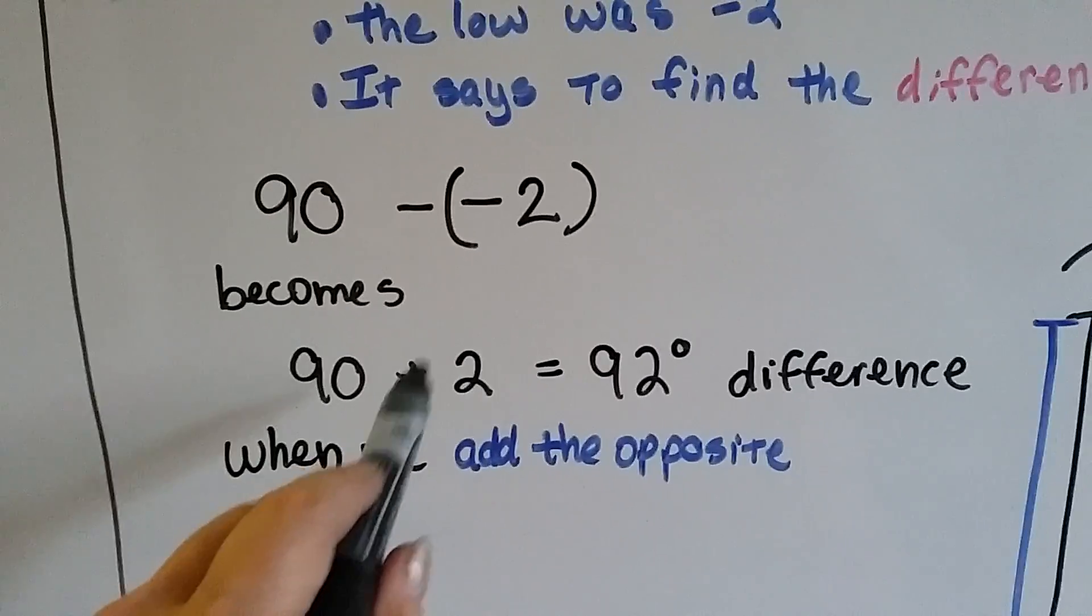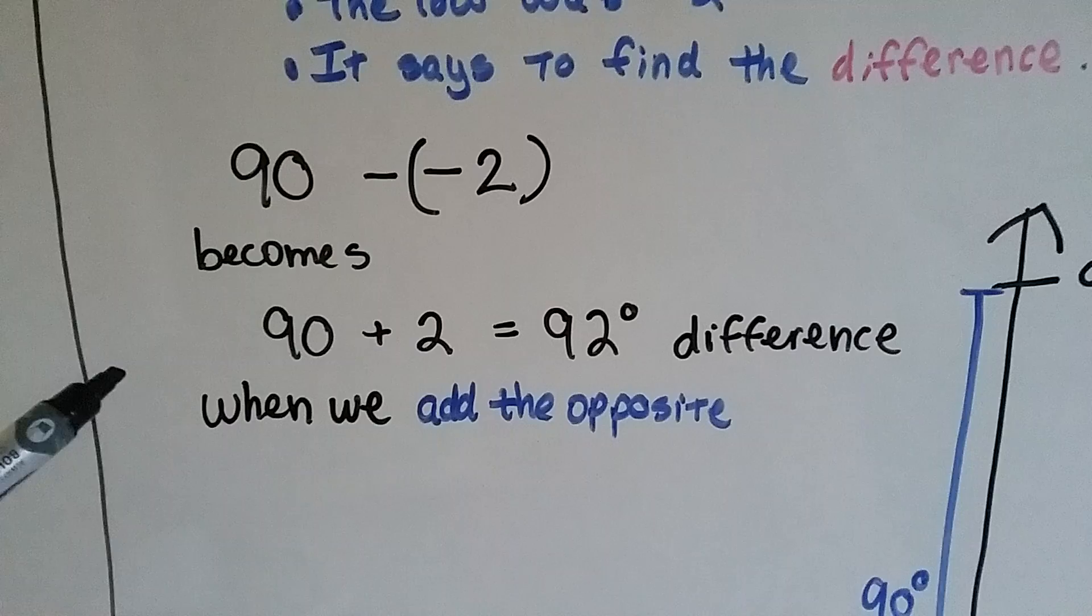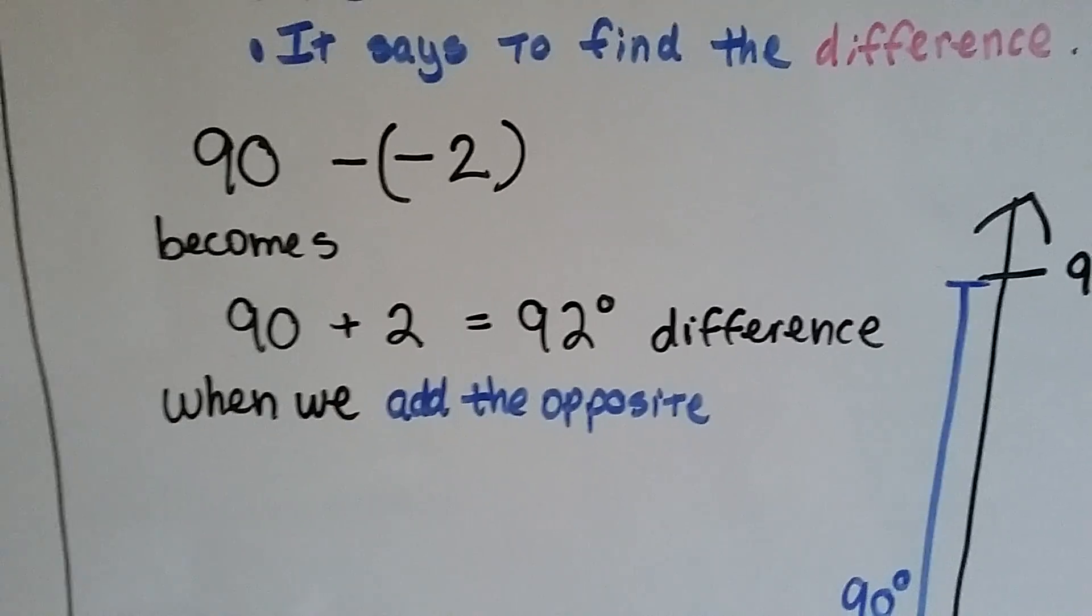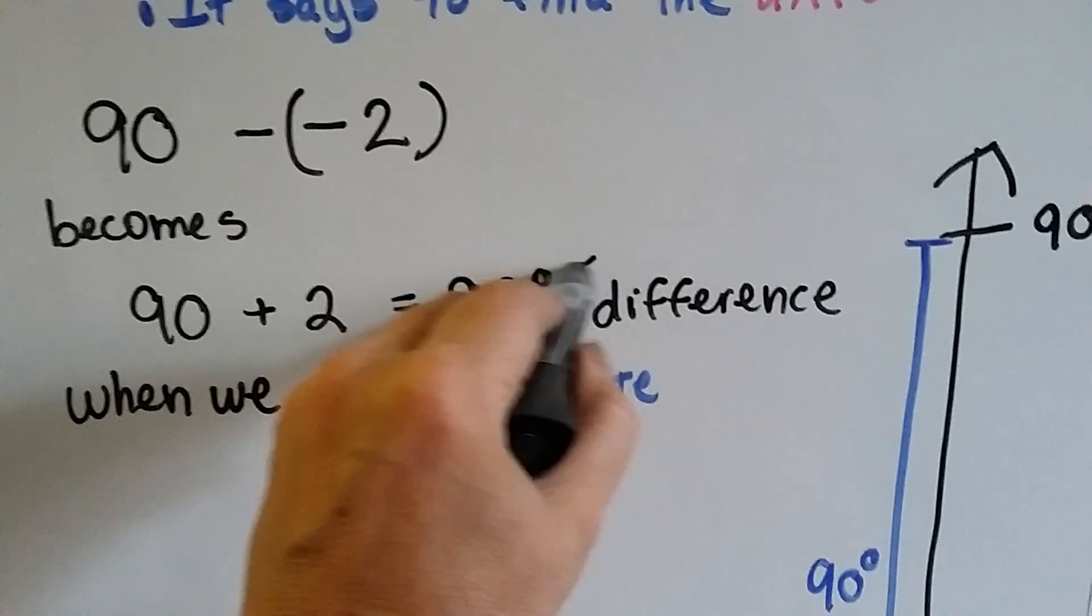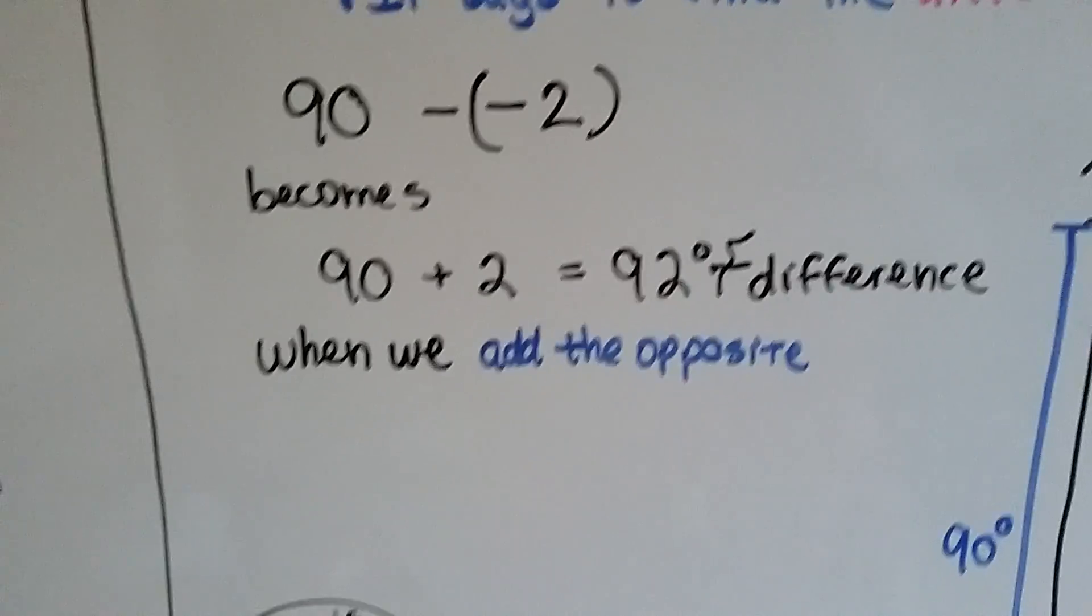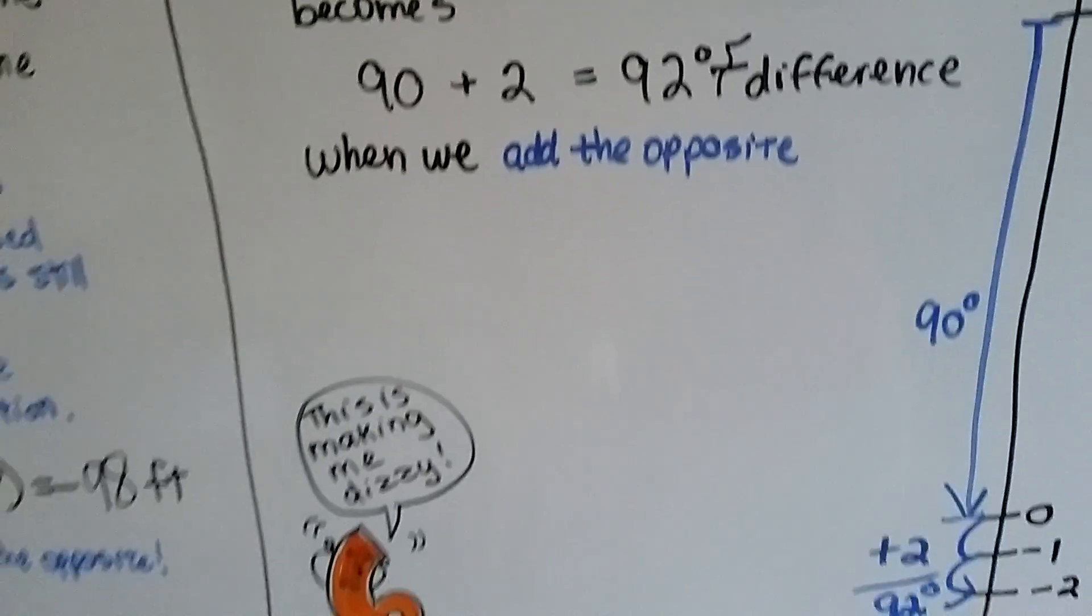So now we have 90 plus 2. Well, shoot. That's easy. We did that in second grade. 90 plus 2 is 92. Right? That's the difference in degrees Fahrenheit. And we added the opposite.